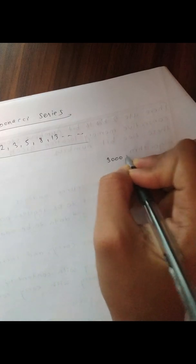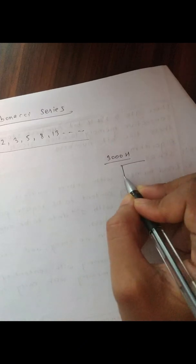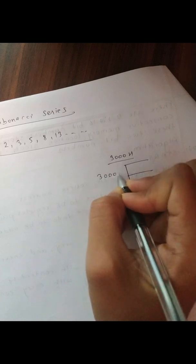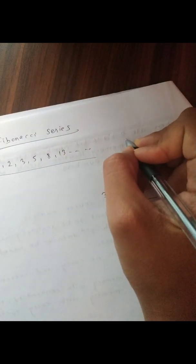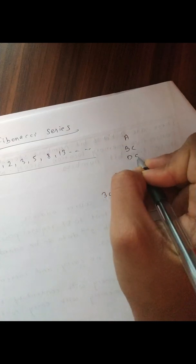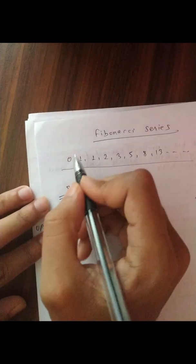Let's assume our memory location starts from 2000H. Let's make a visual representation of memory blocks. These are the memory blocks and 2000H is our starting memory location. The register pairs available to us are A, B, C, D, E, and HL.